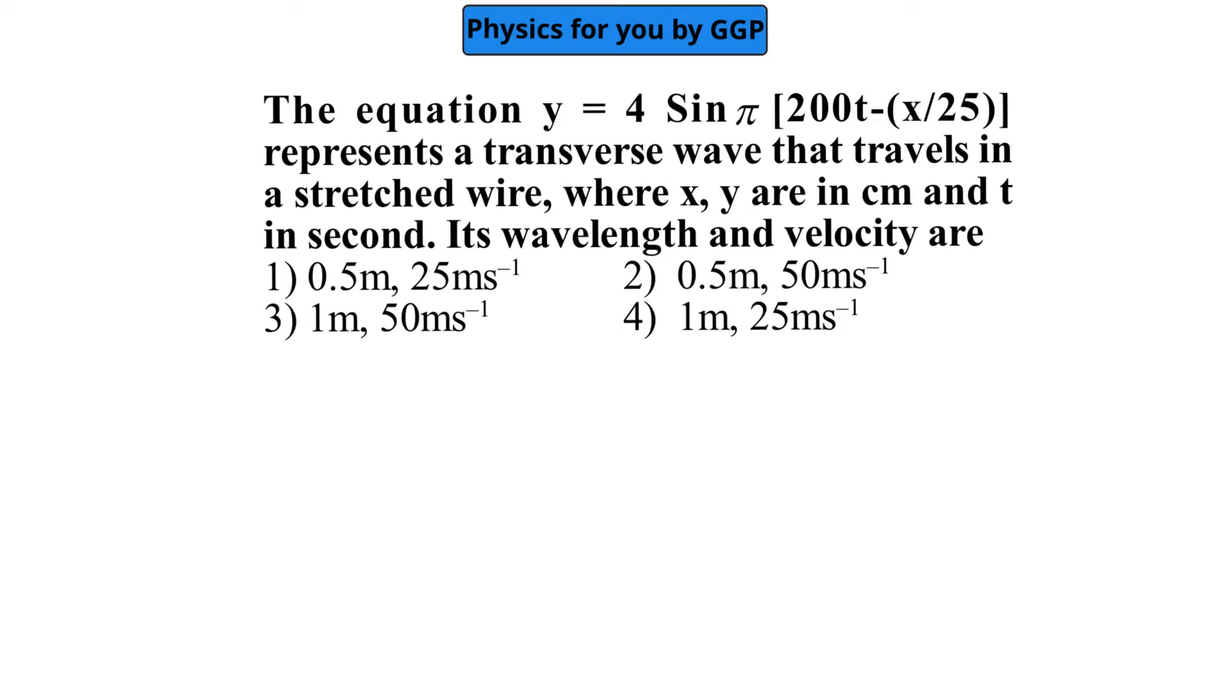It is given that the equation y = 4 sin π(200t - x/25) represents a transverse wave that travels in a stressed wire, where x and y are in centimeters and t is in seconds. We need to find its wavelength and velocity.